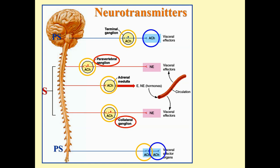Parasympathetic postganglionic fibers also release acetylcholine, making three of the four cases cholinergic. The most widespread transmitter in the body is therefore acetylcholine. The one exception is sympathetic postganglionic fibers, which release norepinephrine in most cases — making norepinephrine the distinguishing transmitter of the sympathetic postganglionic system.